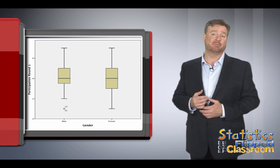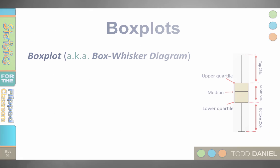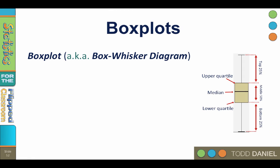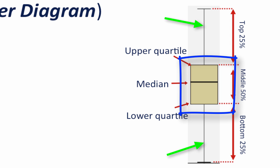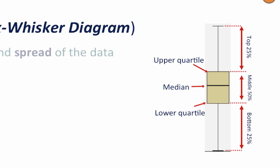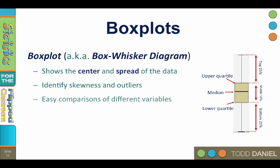Since you may be new to box plots, let's start with the basics. The box plot, also known as a box and whisker diagram, is made up of two components: a box and two whiskers. The box plot shows the center and the spread of the data, which helps us to identify skewness and outliers, and makes it easy to compare different variables.